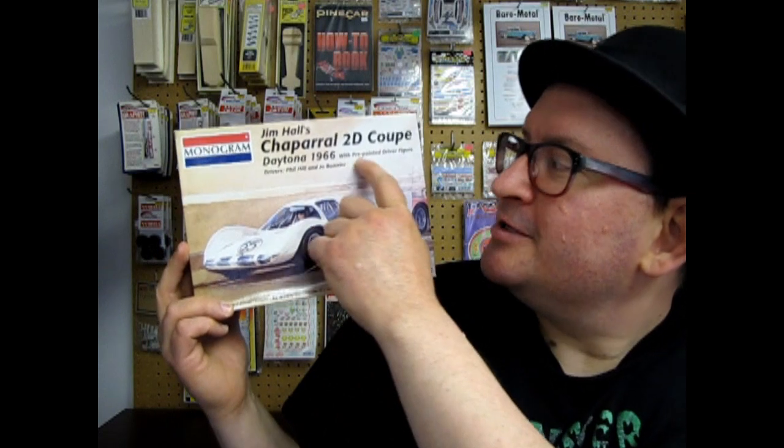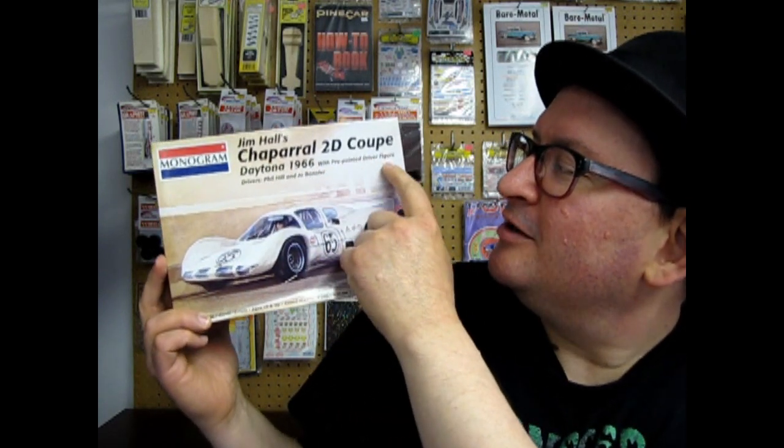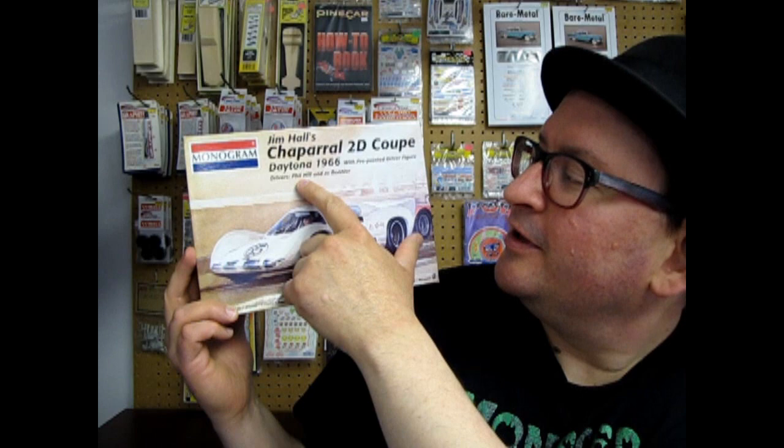Hello once again race fans, welcome back to the pit. Today we are looking at another one of the great race cars. I figured last week we were looking at the Alpine A210 by Union, so we might as well continue racing at the pits with our Monogram 1966 Chaparral 2D Coupe Daytona 1966 Jim Halls with pre-painted driver figure, drivers Phil Hill and Joe Barnier. So that was quite a big title on this box for a very cool kit.